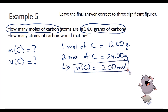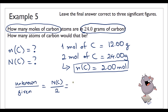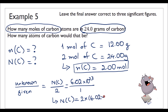From there I can work out the number of carbon atoms. Using the conversion factor, N of C over 2 equals 6.02 times 10 to the 23 over 1. So the number of carbon atoms is 2 times 6.02 times 10 to the 23, which gives 1.204 times 10 to the 24 atoms.